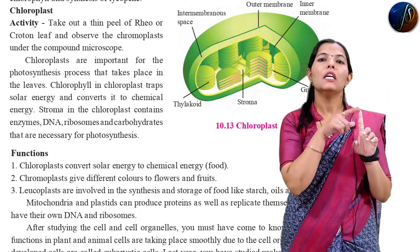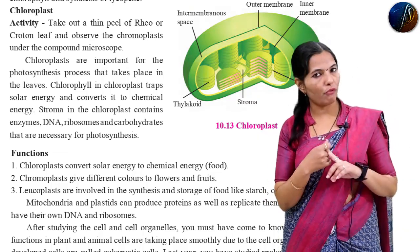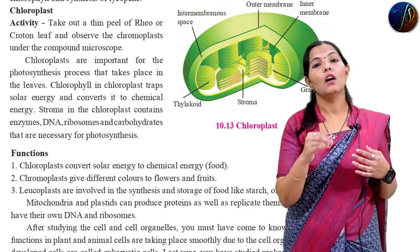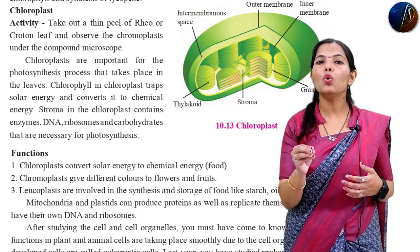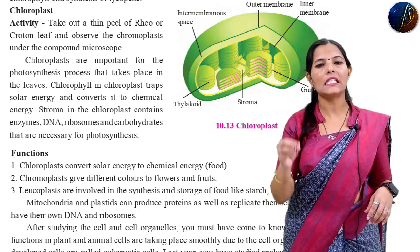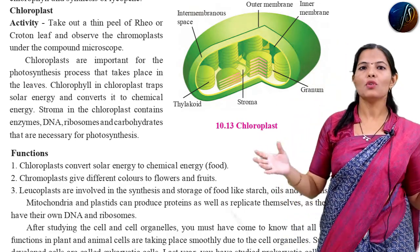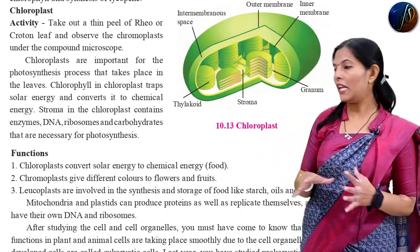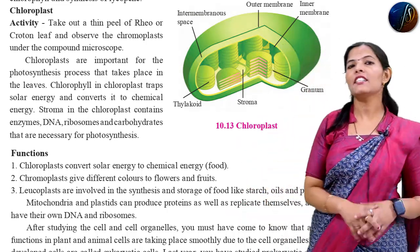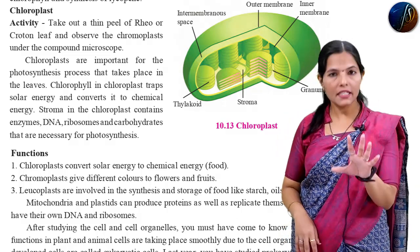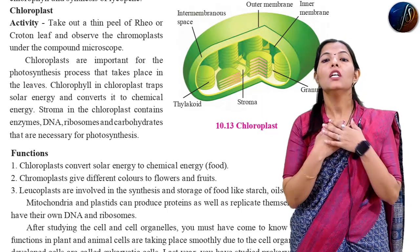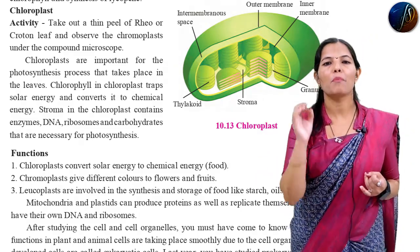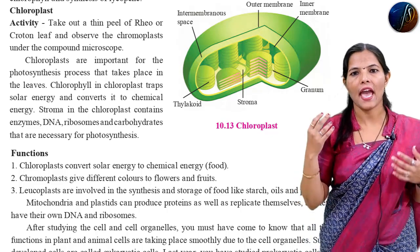So remember three functions: chlorophyll pigment is important for the process of photosynthesis; chloroplast converts solar energy into chemical energy; chromoplast gives bright color to all the fruits and flowers; and leukoplast stores food in the forms of proteins, oils, and starch. Mitochondria and plastids can produce their own proteins as well as replicate themselves, as they have their own DNA and ribosomes.